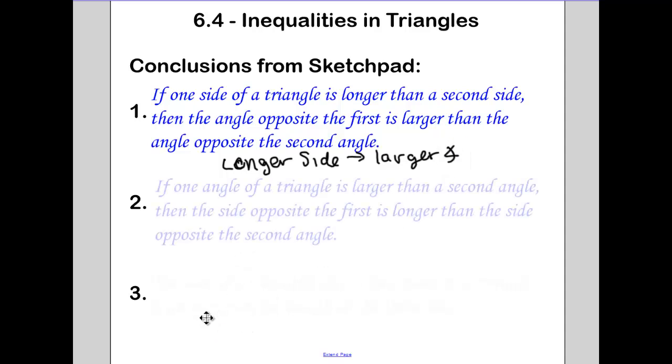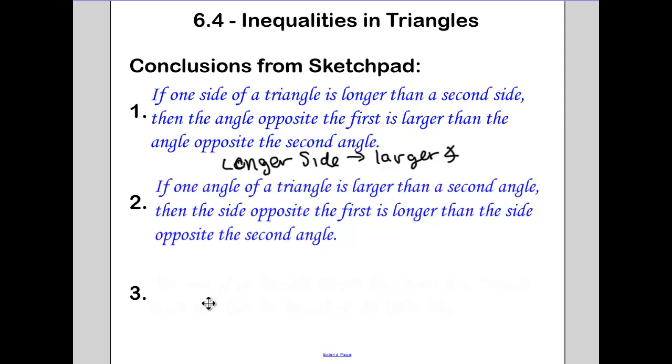And then a second conclusion we had: if one angle of a triangle is larger than a second angle, then the side opposite the first is longer than the side opposite the second. So larger angle gives us the longer side.